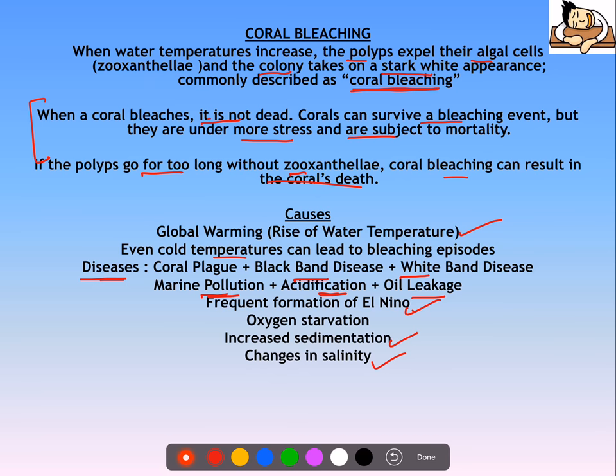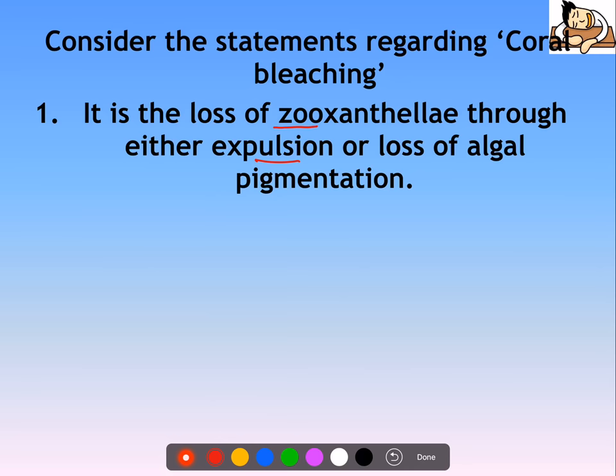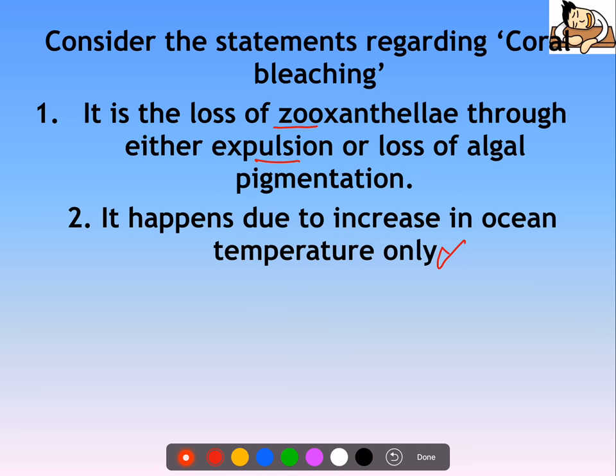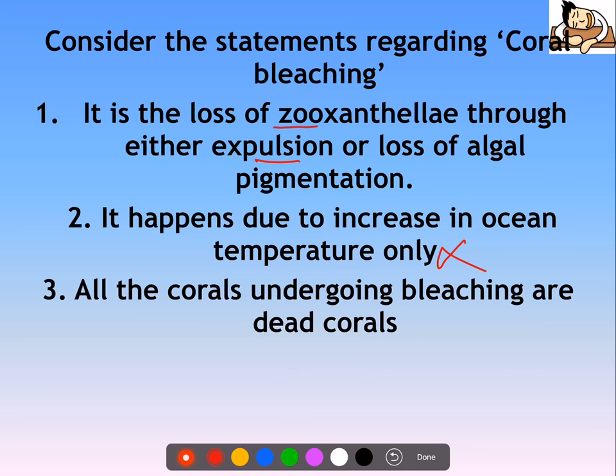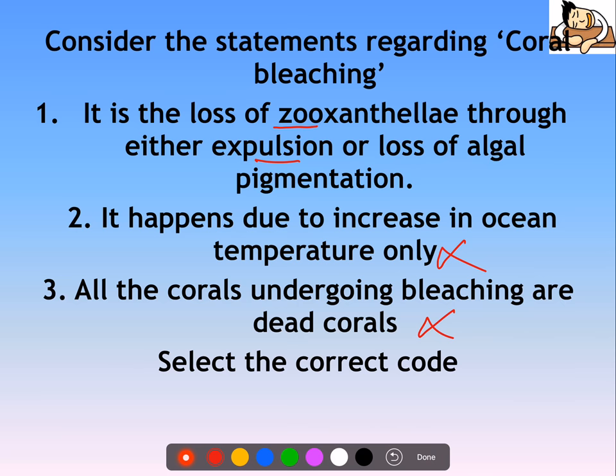Practice question on coral bleaching: Consider the following statements — (1) it is the loss of zooxanthellae through expulsion or loss of algal pigmentation; (2) it happens due to increase in ocean temperature only — this is wrong, because low temperatures also cause it; (3) all corals undergoing bleaching are dead — this is also wrong, as mortality chances increase but death is not immediate. Only statement one is correct. That's all for today, thank you so much.